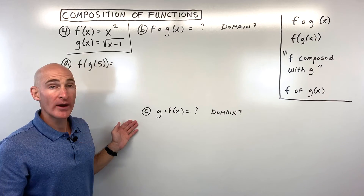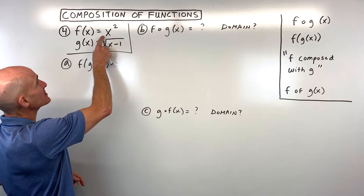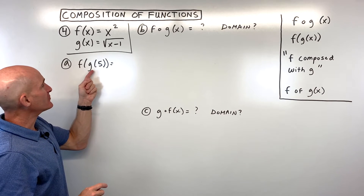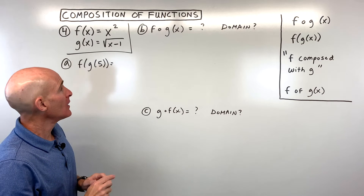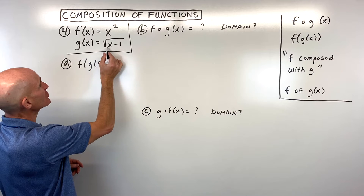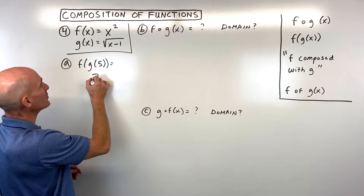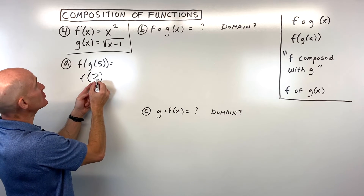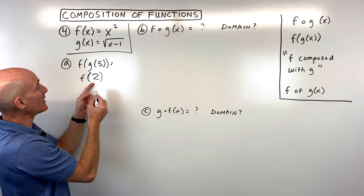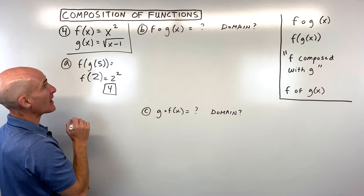Let's take a look at one last example. For example number 4, f of x equals x squared and g of x equals the square root of x minus 1. To calculate f of g of 5: starting on the inside, I go to my g function — 5 minus 1 is 4, and the square root of 4 is 2. Now f of 2: whatever's in parentheses goes in place of x, so that's 2 squared, which is 4.